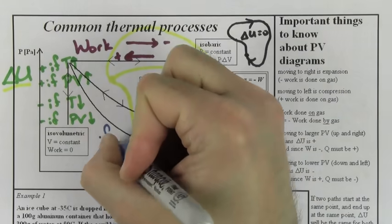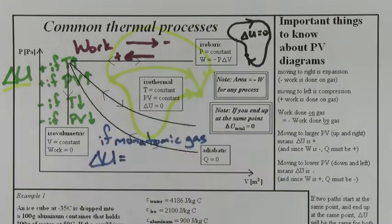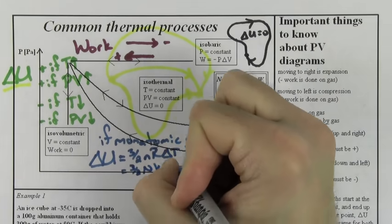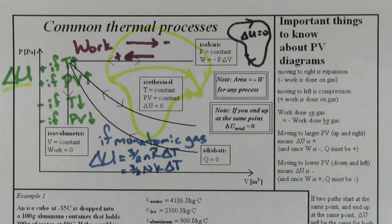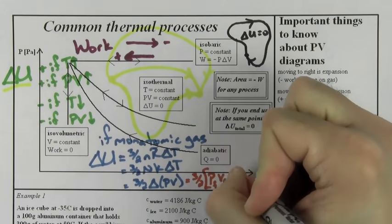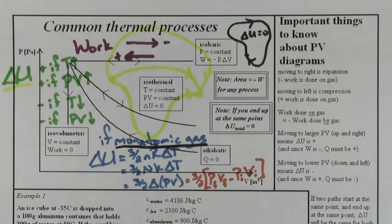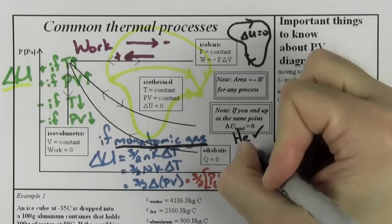If the gas happens to be monatomic, you can use the formula delta u equals 3 halves nr delta t or 3 halves nk delta t. But the most practical version of this equation is the formula 3 halves delta p times v, where delta p v refers to p final v final minus p initial v initial. But you can only use these formulas if it's a monatomic gas, like helium.